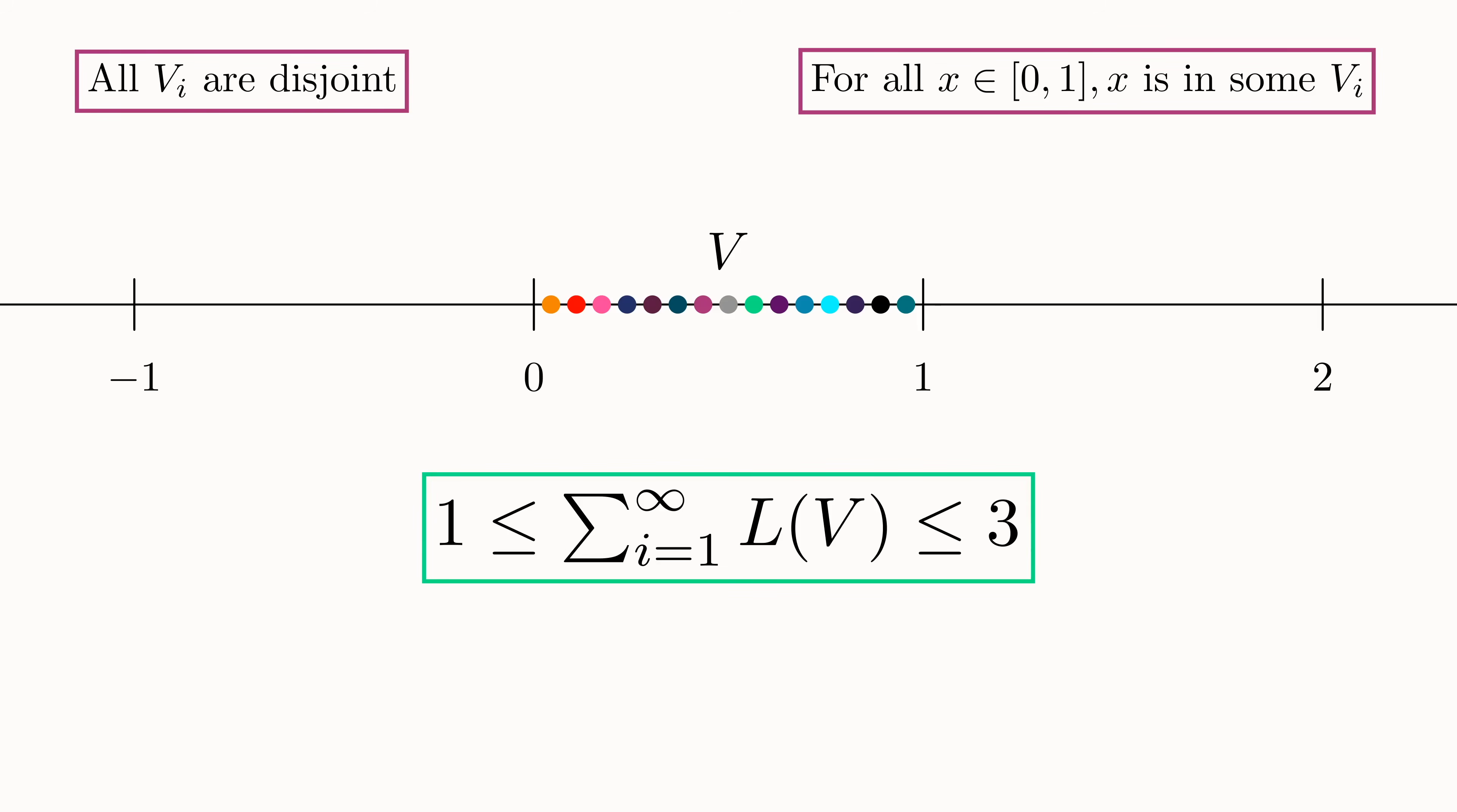But there's no possible size that V can be. If the size of V is zero, then this infinite sum is just zero added to itself an infinite number of times, which just gives zero. If the size of V is greater than zero, even if it's some extremely small number, then the sum will be infinity. So the size of V can't be zero, and it can't be anything greater than zero. So it simply has no size.